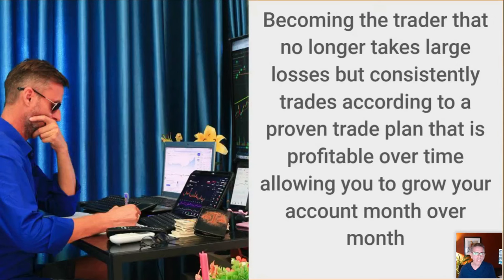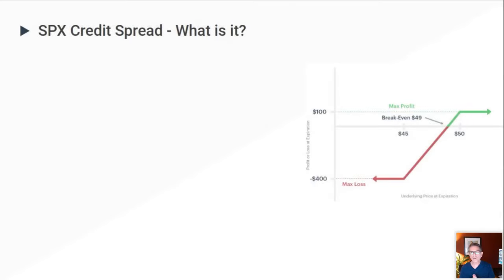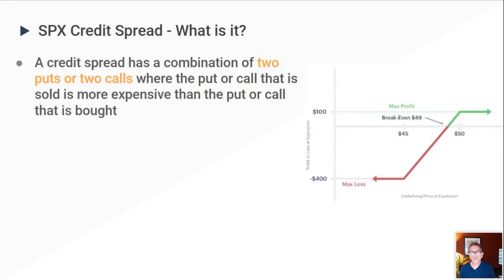Before we get into the real technical part of the presentation, let's talk about exactly what these trades are — SPX credit spreads. A credit spread is a combination of two puts and two calls where the put or call that is sold is more expensive than the put or call that is bought. These are called verticals because you have two calls or two puts stacked on top of each other.